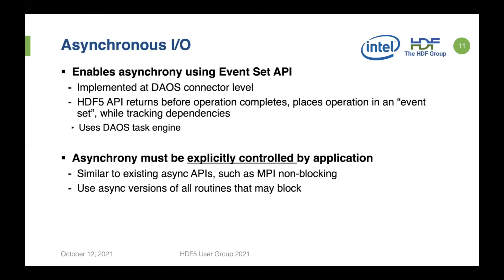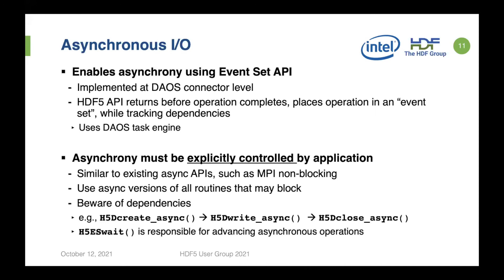Asynchronous IO is similar in model to MPI non-blocking: you use async versions of all routines that may block. The HDF5 API returns before the operation completes and places the operation in an event set using a DAOS task engine. Asynchrony must be explicitly controlled by the application — there is no implicit asynchrony. Be careful about dependency chains: H5D_create_async followed by H5D_write_async means the write depends on the create. Progress only begins when you call H5ES_wait.